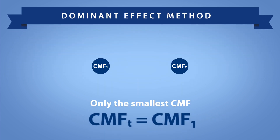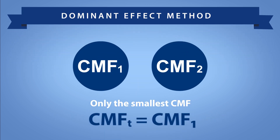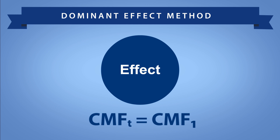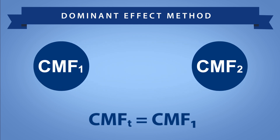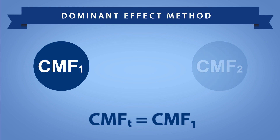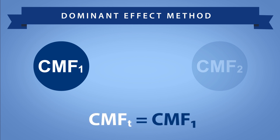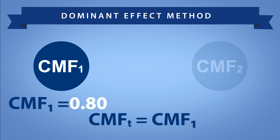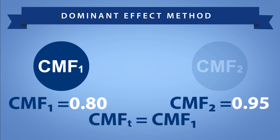The dominant effect method only considers the effect of the countermeasure with the smallest CMF. This method is appropriate for scenarios where there is complete overlap expected among the countermeasure effects. Using the dominant effect method, you simply apply the smallest CMF, ignoring the effect of the other. CMF1 is the applicable CMF for the individual countermeasure with the smallest value, and CMFt represents the combined effect. For example, if CMF1 is 0.80 and CMF2 is 0.95, then CMFt is 0.80, which is the smallest CMF and the greatest effect.